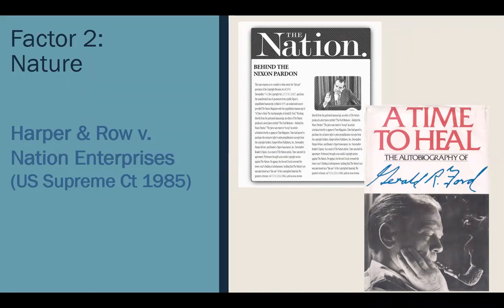Somehow, The Nation was able to get a copy of the book and preempted the Time Magazine publication of the excerpts, putting them in their magazine before Time had an opportunity. Harper & Row brought a lawsuit against The Nation. Under the first factor, purpose and character, this weighed against fair use because The Nation was not merely using an incidental effect — the intended purpose was to supplant the copyright holder's commercially valuable right of first publication. The court ruled that The Nation's intent deprived the copyright holders of the first right of publication, so under factor one, it was not a fair use.